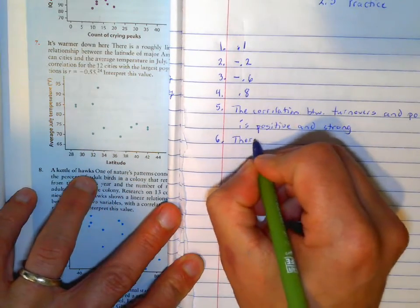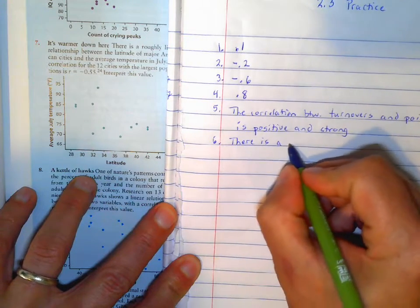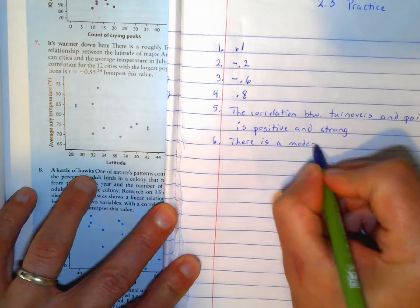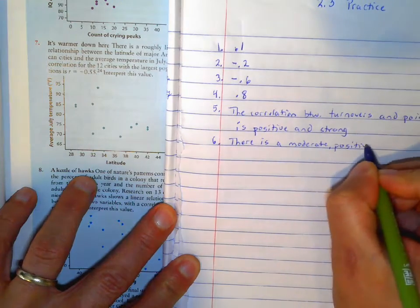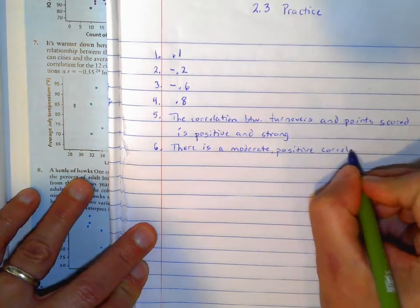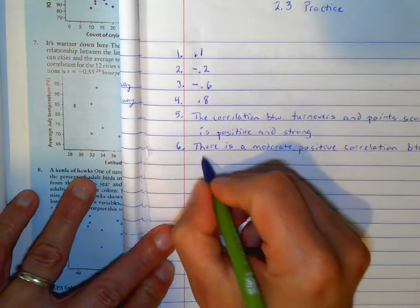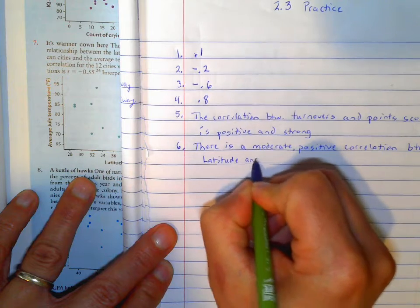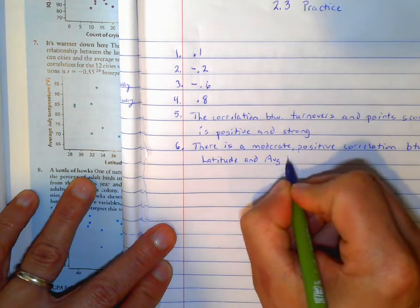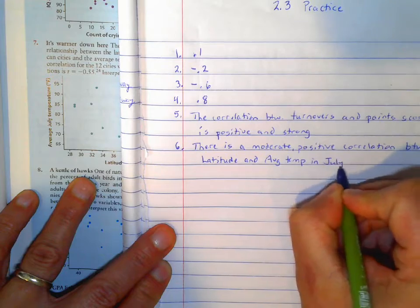So we can say there is, we phrased it a little bit different than the first one, a moderate positive correlation between latitude and average temperature in July.